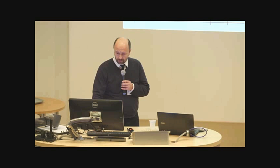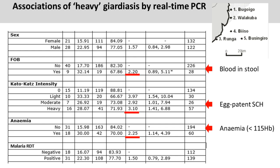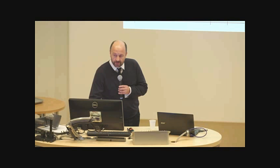Looking at associations with heavy Giardia and other diseases: first, there's a strong association with blood in stool. Next, there's a strong association with egg-patent schistosomiasis - it's probably about a three to five-fold association of egg-patent schistosomiasis and heavy giardiasis. And interestingly, there's a strong association with anemia. I think this also manifests with other impairments such as stunting. Along this lakeshore environment, these three diseases are really hyperendemic - a tight red line of hyperendemicity.